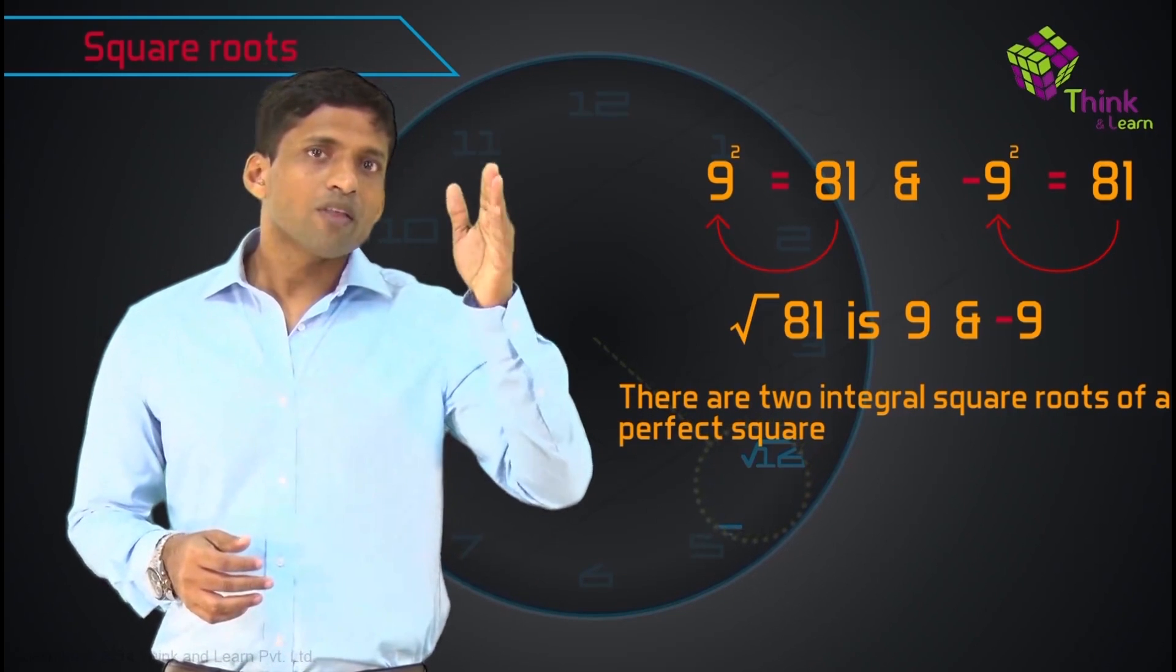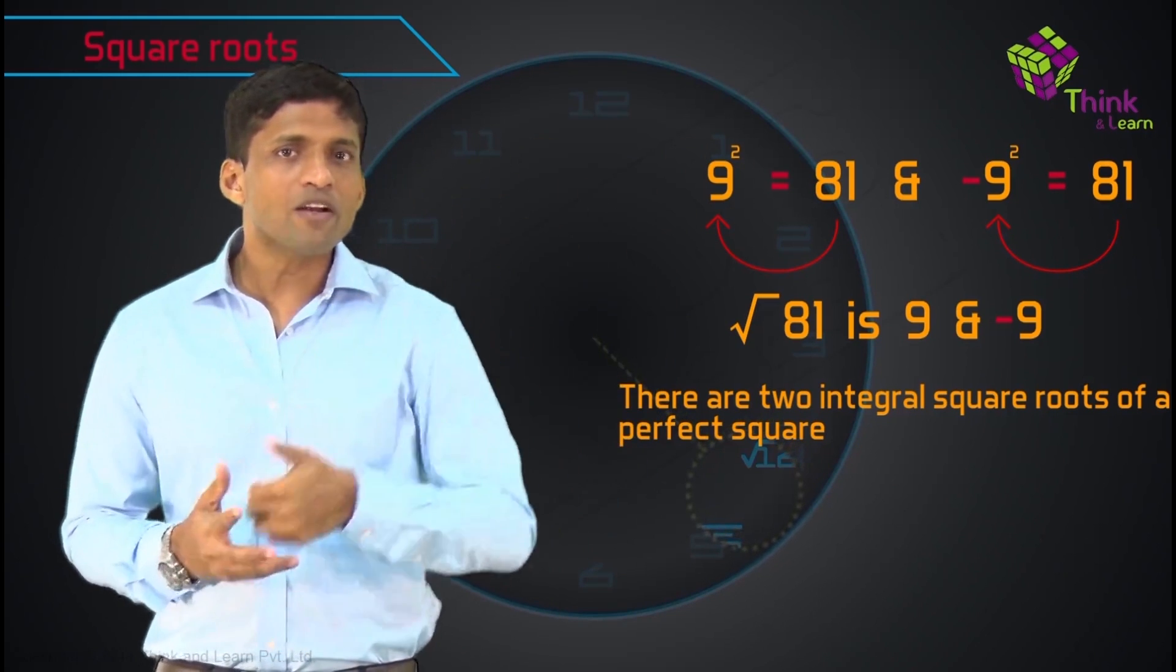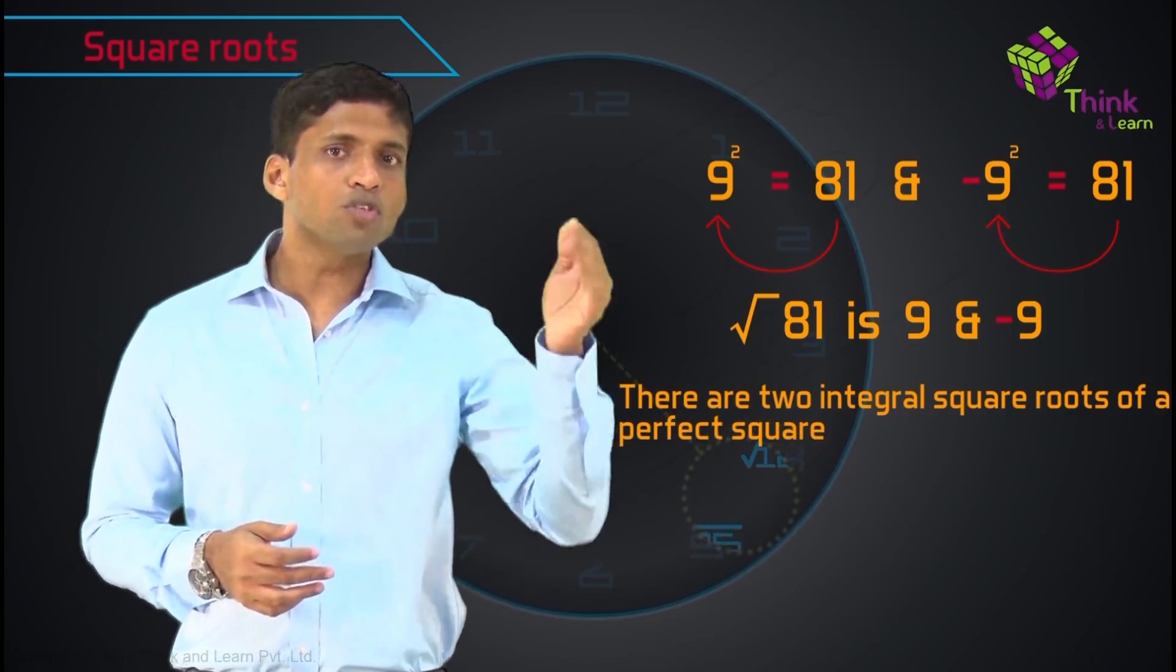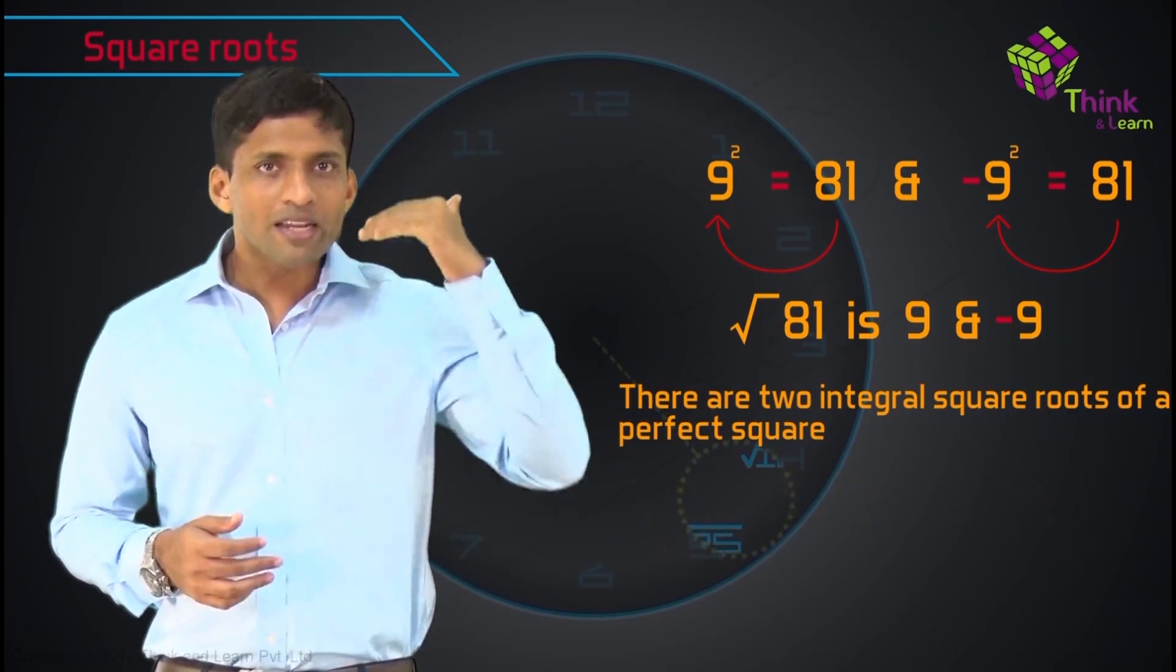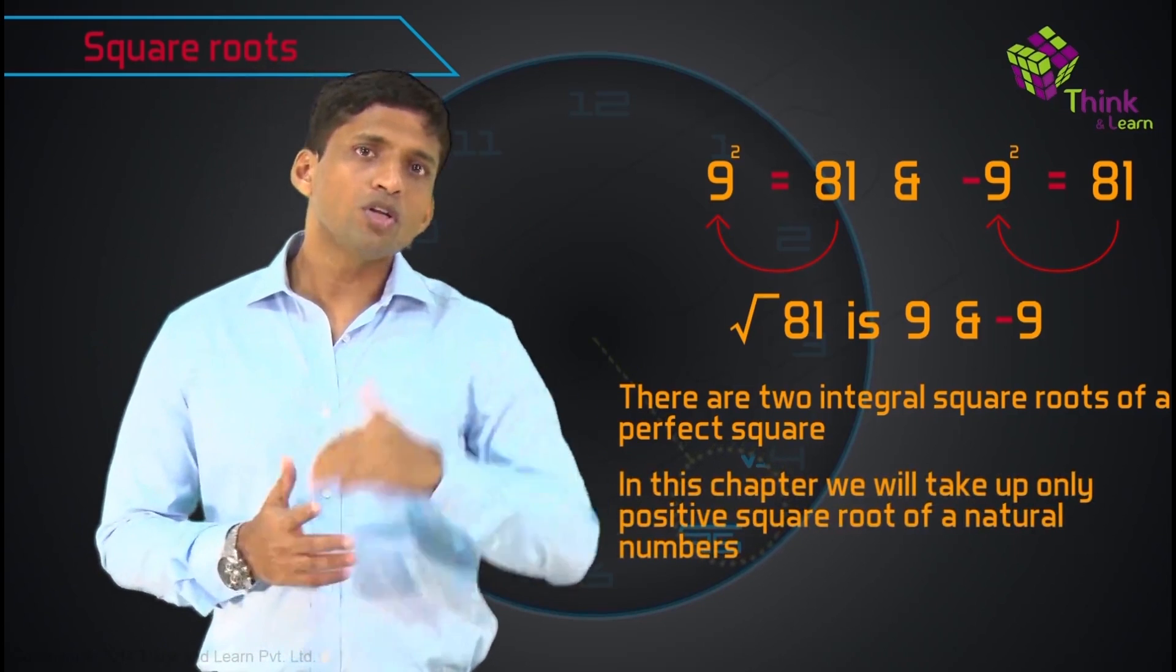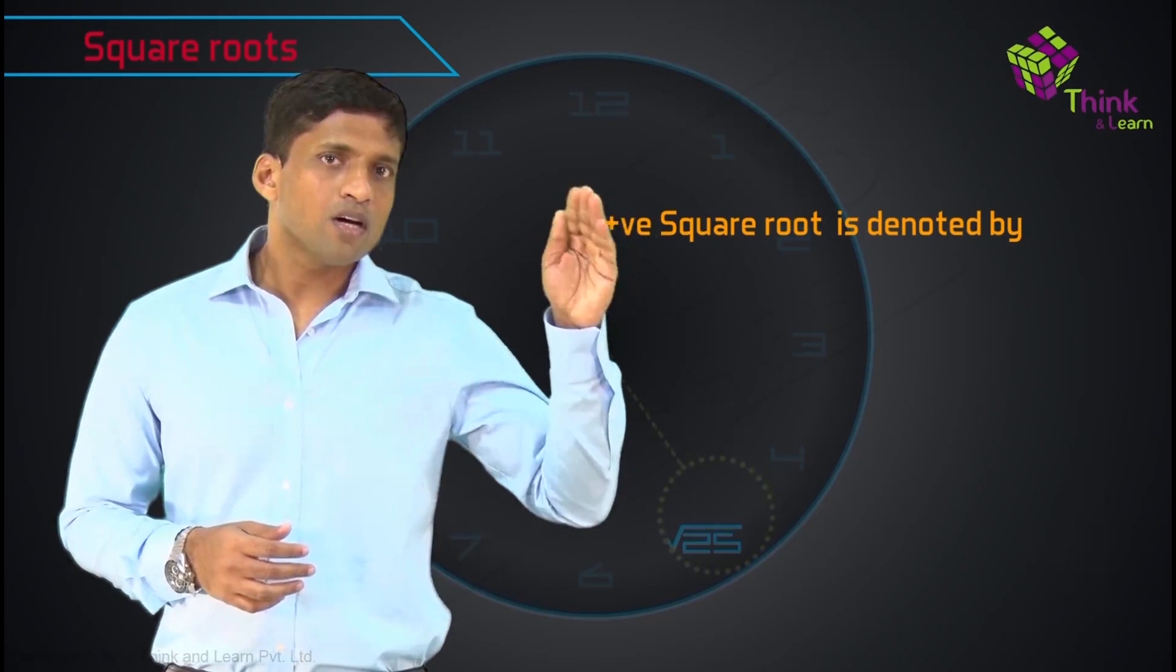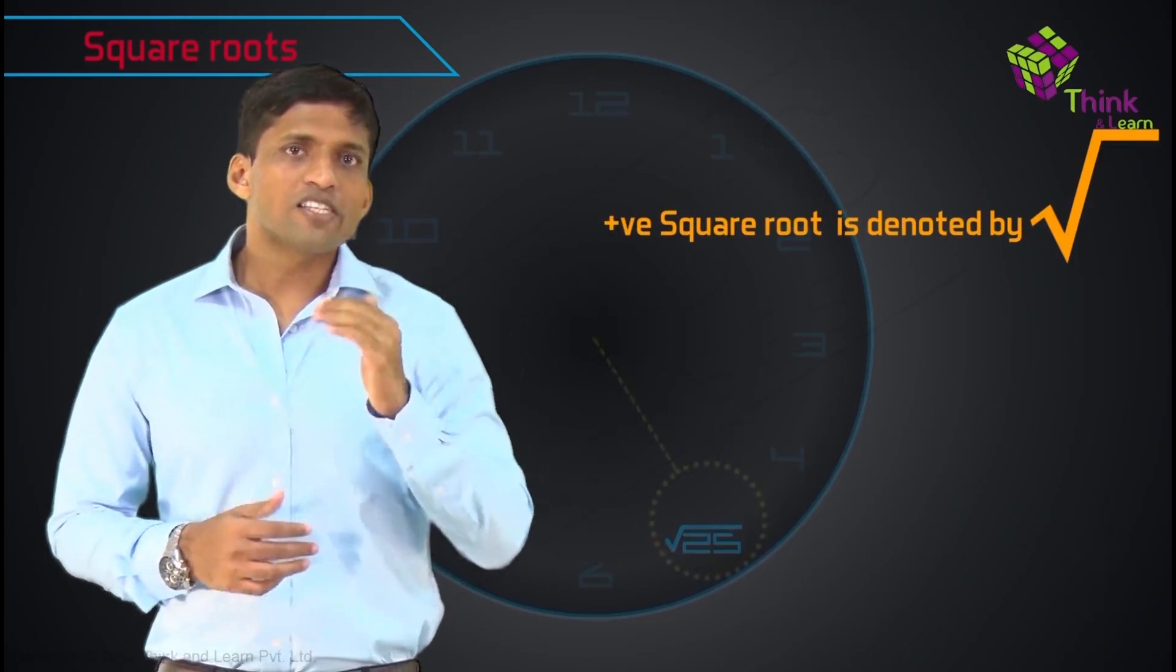Because 81 square root can be 9 or minus 9. If I write in words, there are two integral square roots of a perfect square. But in this chapter, we will take up only positive square root of a natural number.